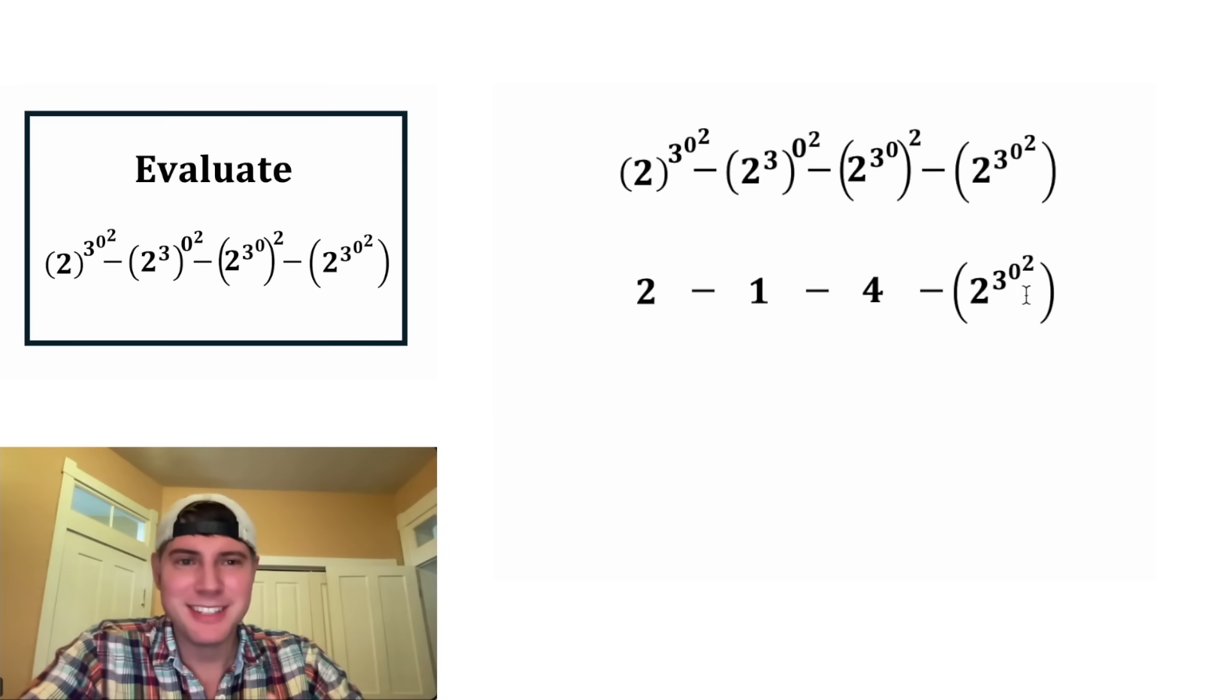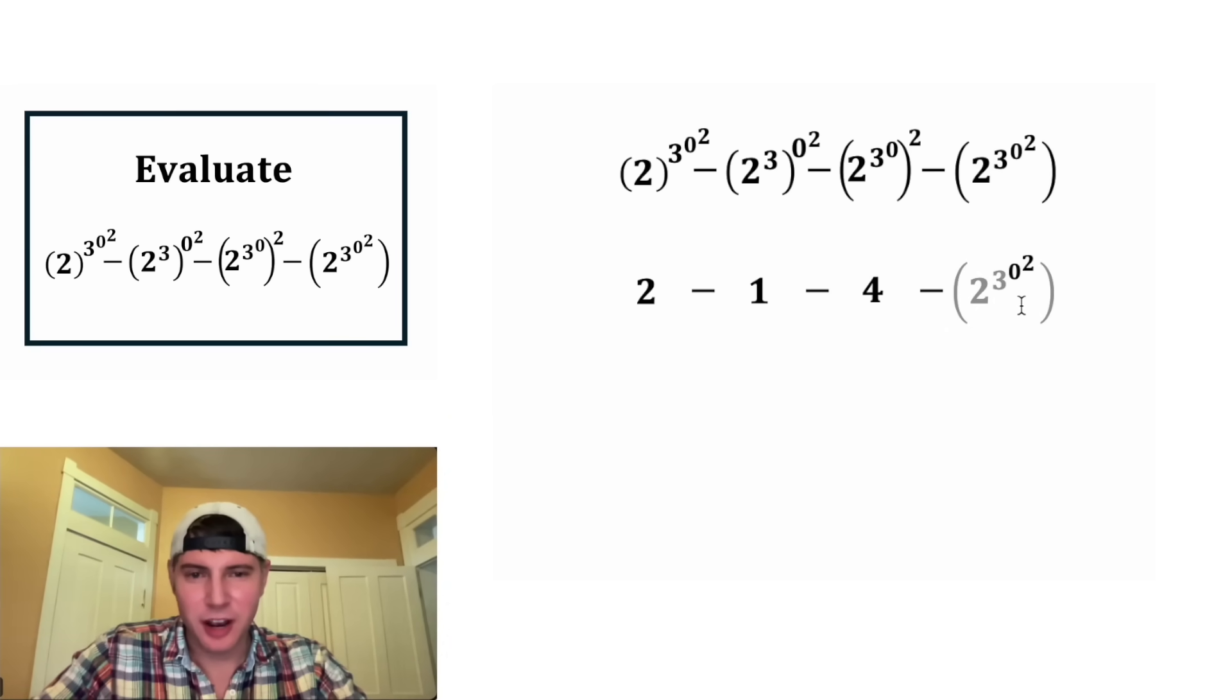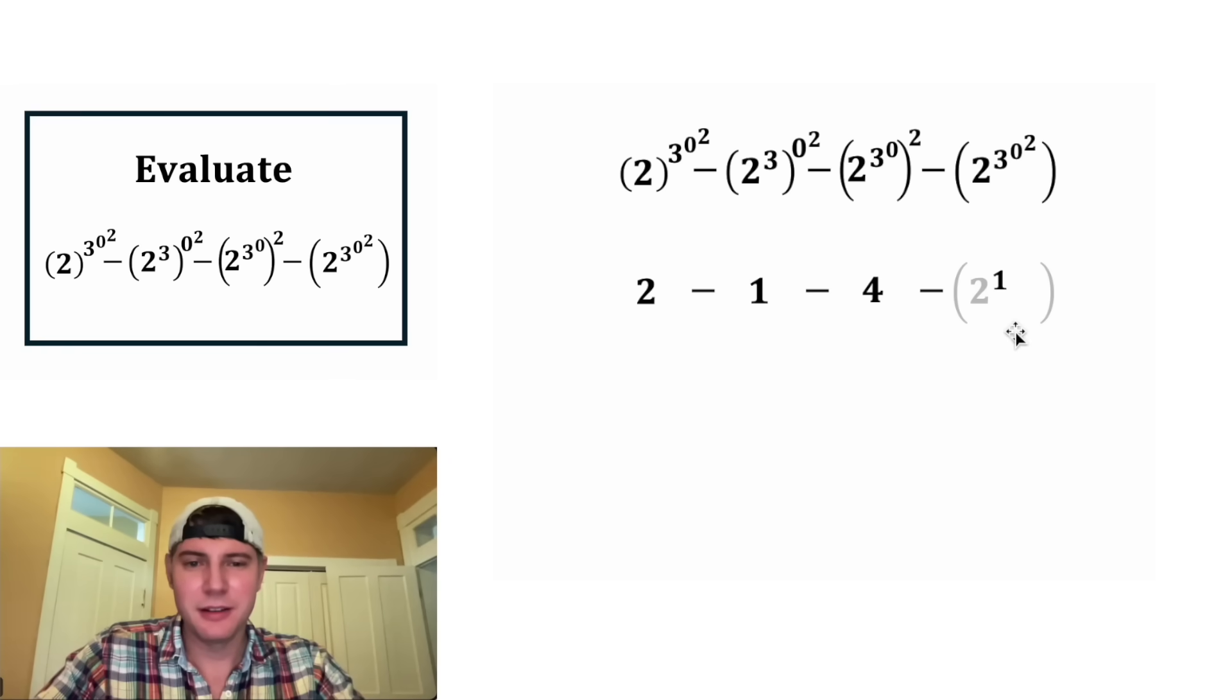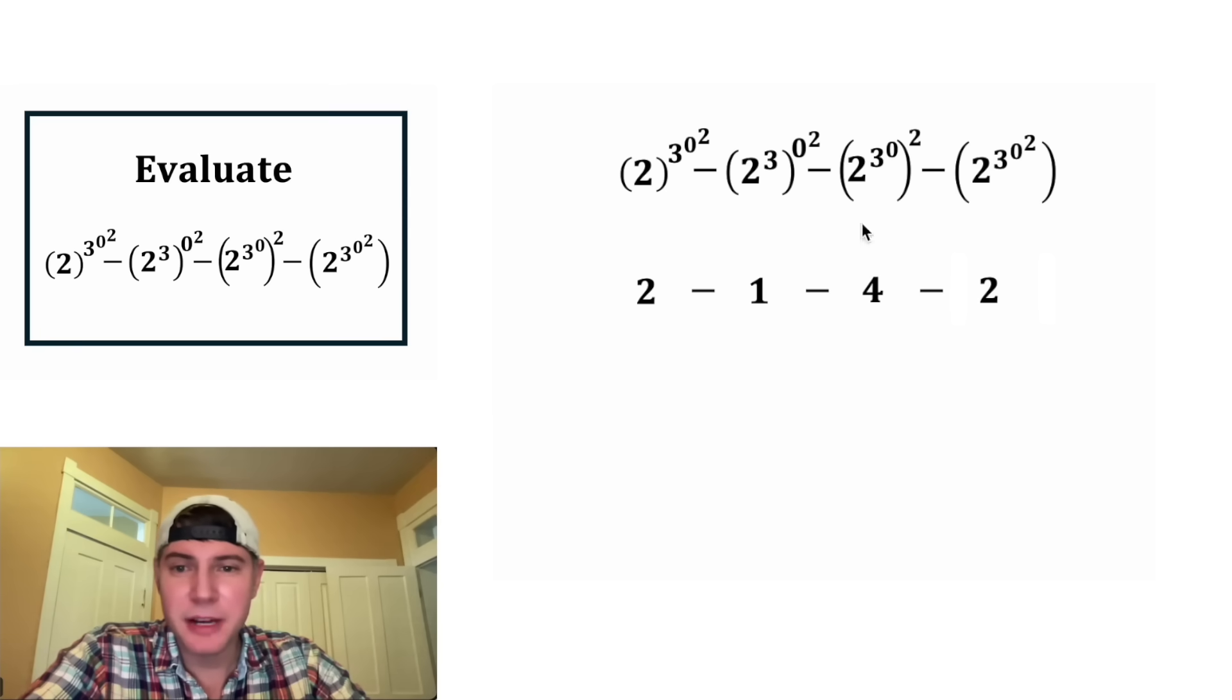Now let's do the last term. Since everything is inside the parentheses, we're just going to do the whole thing, starting at the top of the tower. Zero to the two is equal to zero. Then we're going to do three to the zero. Anything to the zero power is equal to one. Then we have two to the one, which is equal to two. So the last term ended up being the exact same as the first term, but the parentheses affected the other ones.